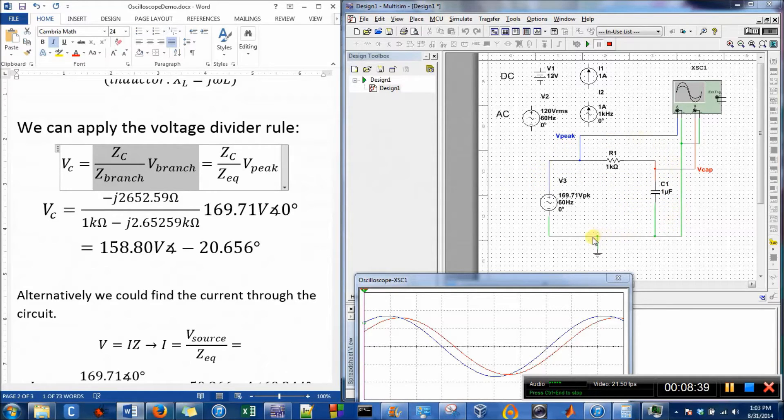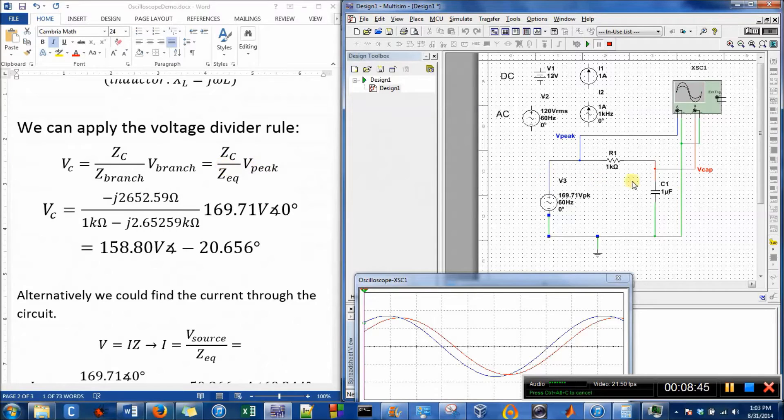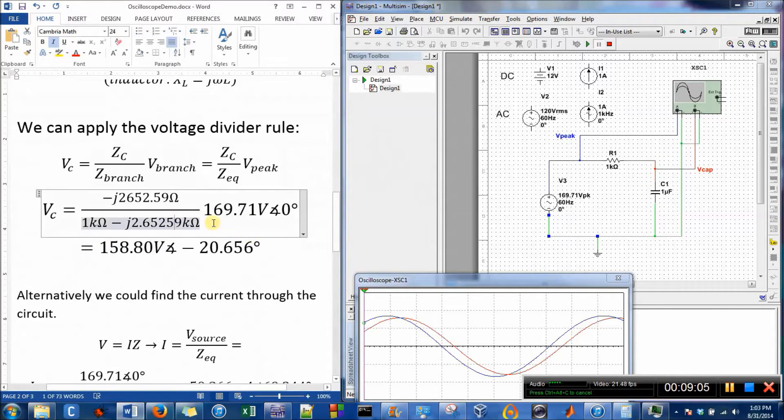From blue to green, that's V_peak multiplied by Z_C, which is red to green over blue plus red over green. I don't know if that makes sense, but...